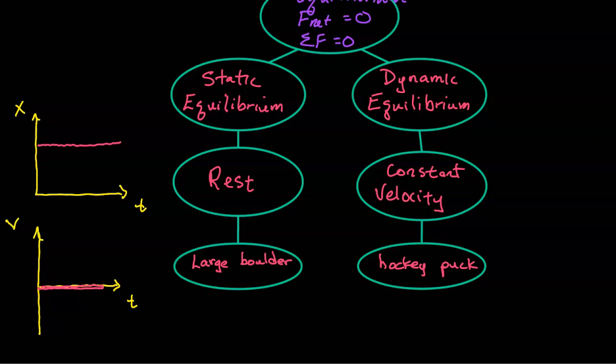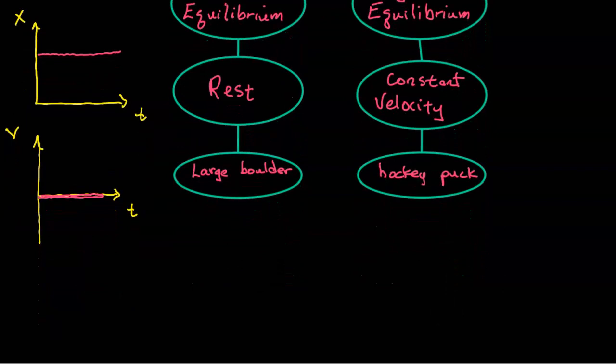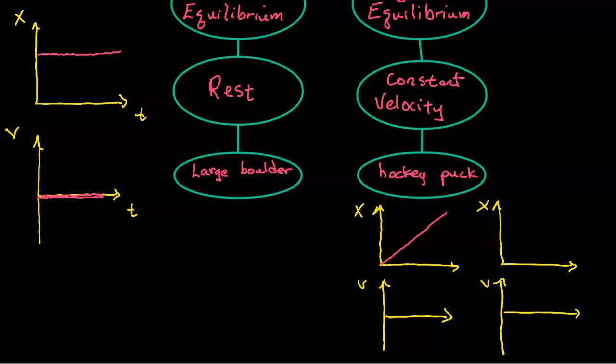And then for constant velocity, we could represent it on the position graph like this. This is something moving at constant velocity. Constant velocity means the velocity is not changing, so over time it's going to look like that.